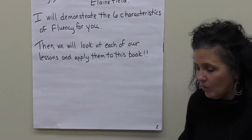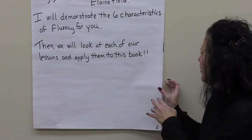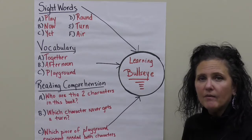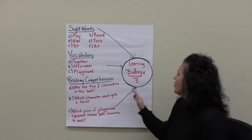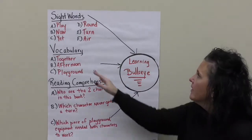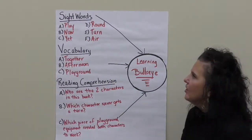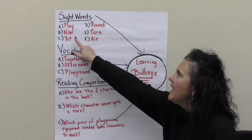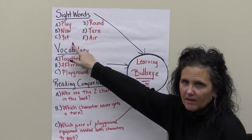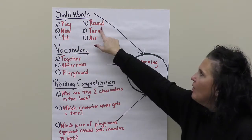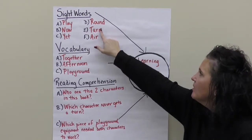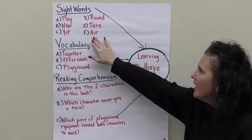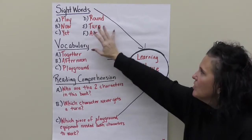So that's the lesson. Let's take all of the things we've studied and put them together in It's My Turn. The first lesson we looked at sight words. So we're going to try to hit this bullseye with our sight words. The first sight word is play — it has a Y at the end but we don't really hear the Y, just play. Then now. Yet — like let and get. Round — remember they went round and round on the merry-go-round. Turn. And air — the A and the I make an E sound. Those would be our sight words. We should recognize those as soon as we see them.